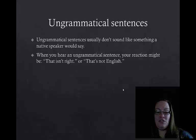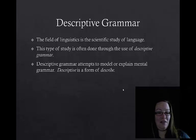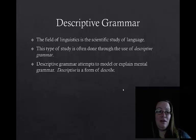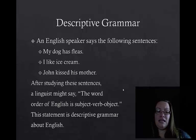Now let's switch to descriptive grammar. Descriptive grammar has to do with the field of linguistics — the scientific study of language — not just translating one language to another. A descriptive grammar attempts to model or explain mental grammar, since we can't directly observe what's happening inside our heads. For example, after studying sentences like 'My dog has fleas,' 'I like ice cream,' and 'John kissed his mother,' a linguist might say the word order of English appears to be subject, verb, object. This is a type of descriptive grammar.